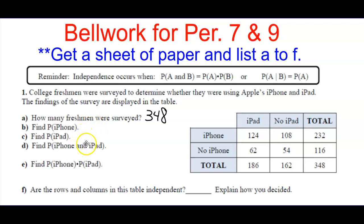The probability of an iPhone and an iPad would be an intersection — find that cell in the table. Also calculate the probability of an iPhone times the probability of an iPad. Go through those four and write a response for each one based on the table. You can pause here; I'll let you know how you did.